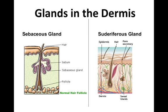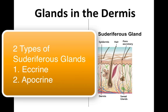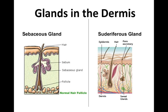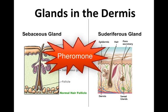There are actually two different kinds of sudoriferous glands. Eccrine glands secrete sweat and respond to elevated body temperatures to help regulate body temperature. The other type is the apocrine gland. Apocrine glands become more active at puberty and are stimulated by hormones. They not only secrete sweat but an oily secretion as well. It is thought that apocrine glands provide a pheromone, which is considered a sexual attractant in the animal kingdom.